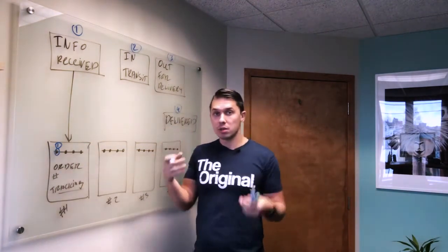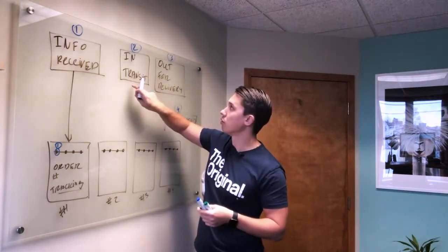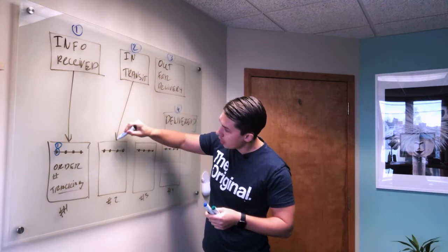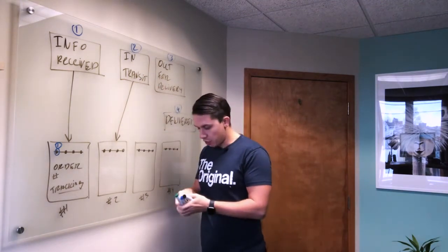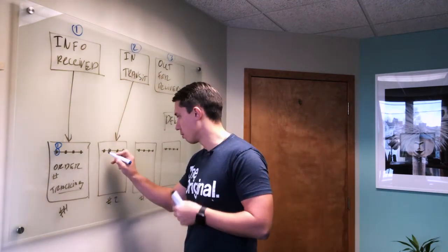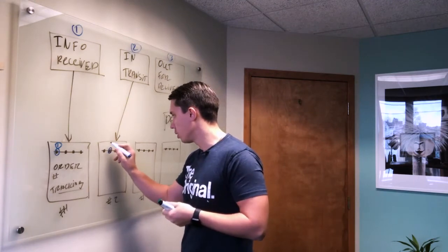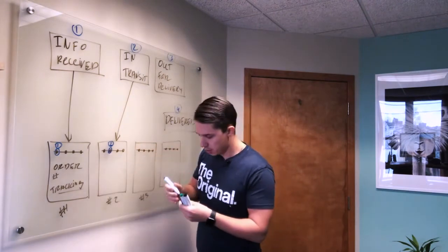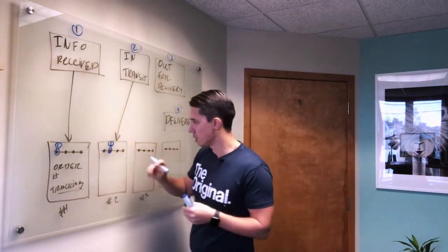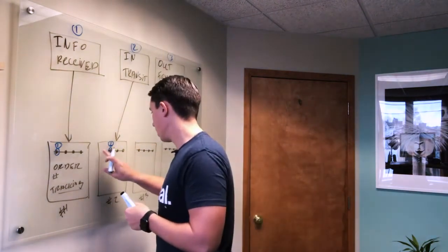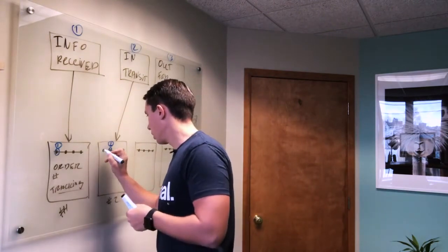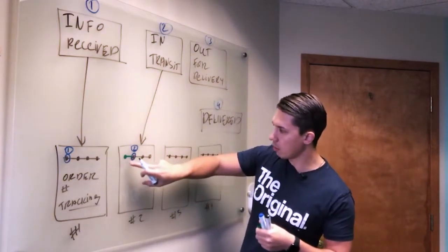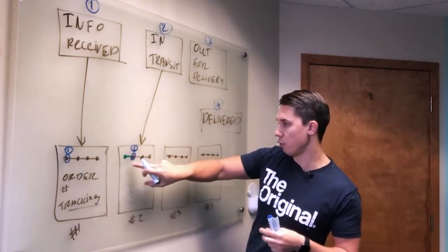So next, when your logistic system like Aftership will receive in transit, this trigger will trigger email number two, which says in transit, and for representation purposes, we'll put it two. So it will show the progress. You can do something like instead of black, make it green for something which was completed. It means the stage number one was completed already, and we move to step number two.